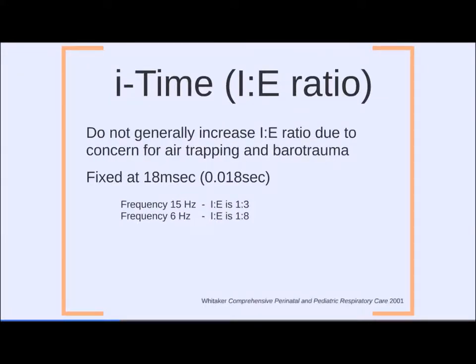On the oscillator you generally don't increase the I:E ratio due to concern for air trapping and barotrauma. The inspiratory time is usually fixed at about 18 milliseconds, so it's dependent on frequency. At 15 Hz the I:E ratio is about 1:3; at 6 Hz it decreases to approximately 1:8.